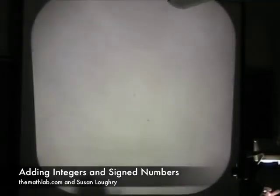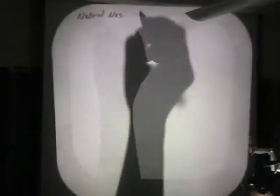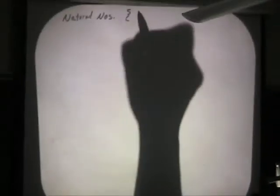What were the first numbers that were invented? They're called the natural numbers. They were invented by cavemen. Natural numbers start at one, two, three, four, et cetera.